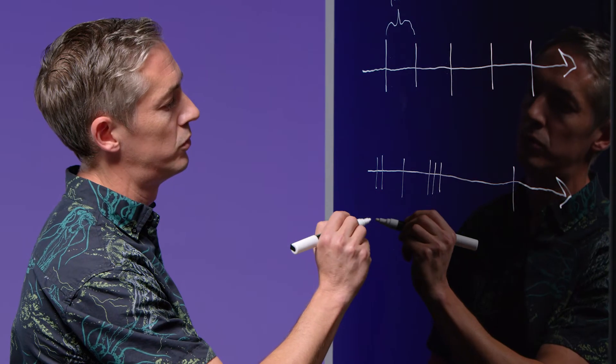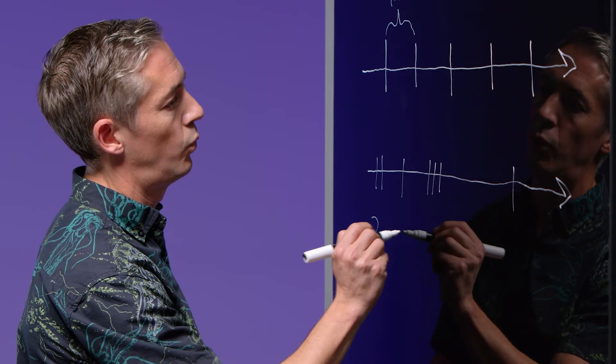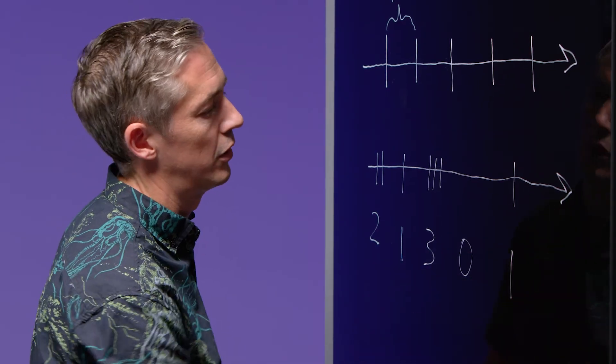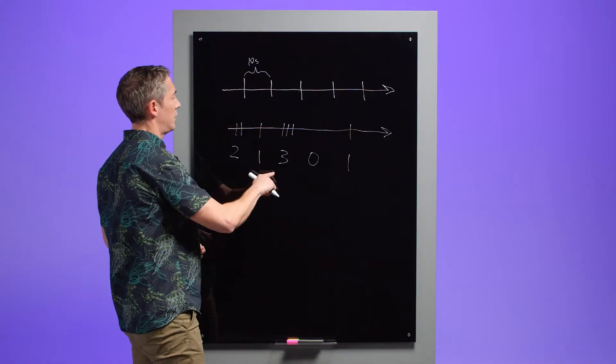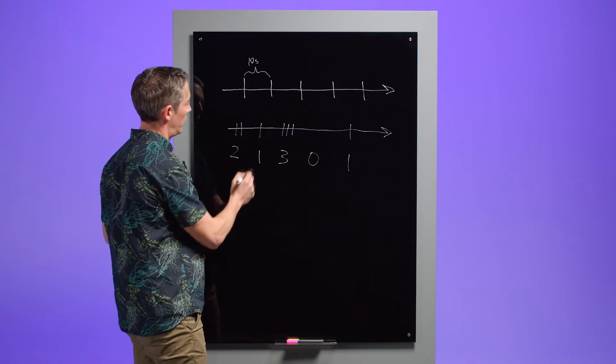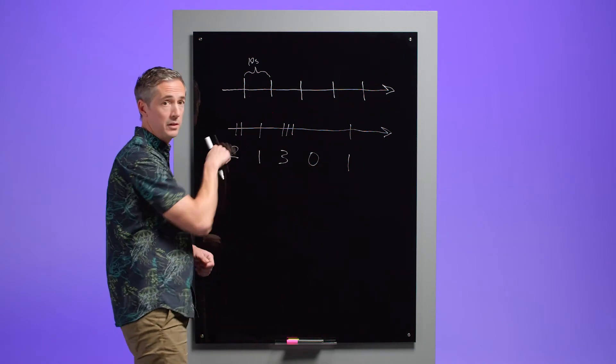Here we have two. We have one. We have three. We have zero. And we have one here. So, what we've done is we've actually induced a regular time series where we have once every 10 seconds from this irregular one.